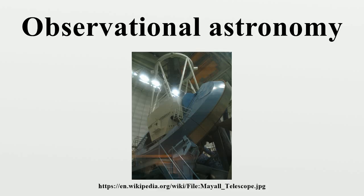Stellar photometry came into use in 1861 as a means of measuring stellar colors. This technique measured the magnitude of a star at specific frequency ranges, allowing the determination of the overall color, and therefore temperature of a star. By 1951 an internationally standardized system of UBV magnitudes was adopted.